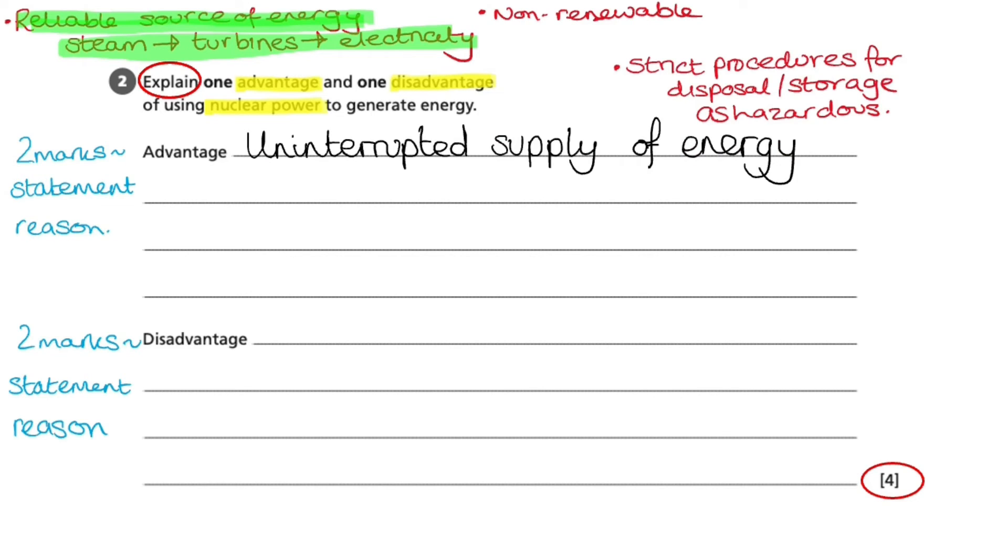So firstly, we are asked for our advantage. I need to write a statement first. From my recall, I have noted that nuclear power is a reliable source of energy. It's continuous, it's uninterrupted. So that's my first statement: uninterrupted supply of energy. And now my reason is as power is produced constantly. And that's it. That's the advantage of nuclear power.